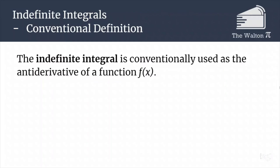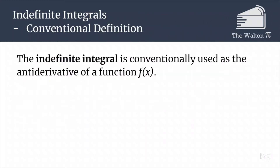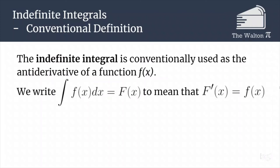An indefinite integral is conventionally used to represent the antiderivative of the function f. Where big F represents the antiderivative of little f, we define the indefinite integral as that antiderivative of the function. So we write the integral of little f of x dx is equal to big F, and that just means that big F prime is equal to little f — the derivative of big F is our little function f.